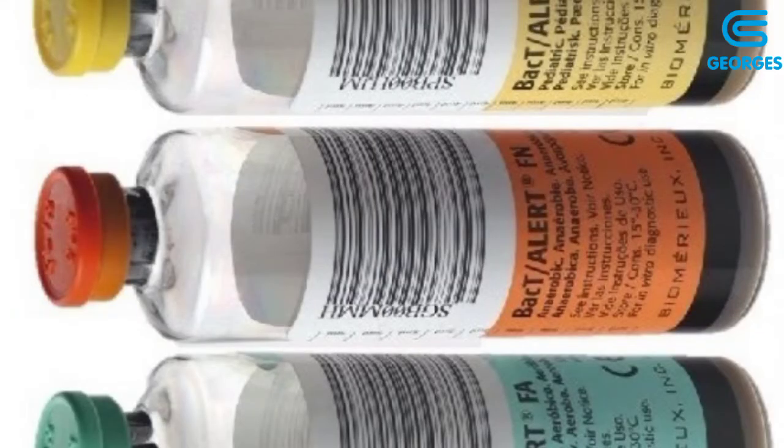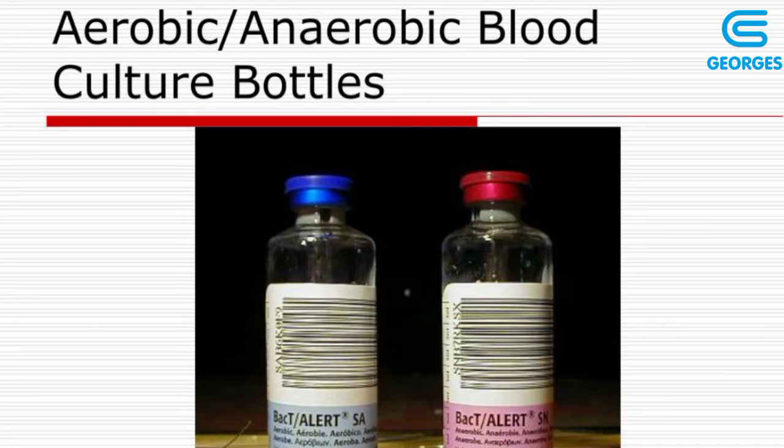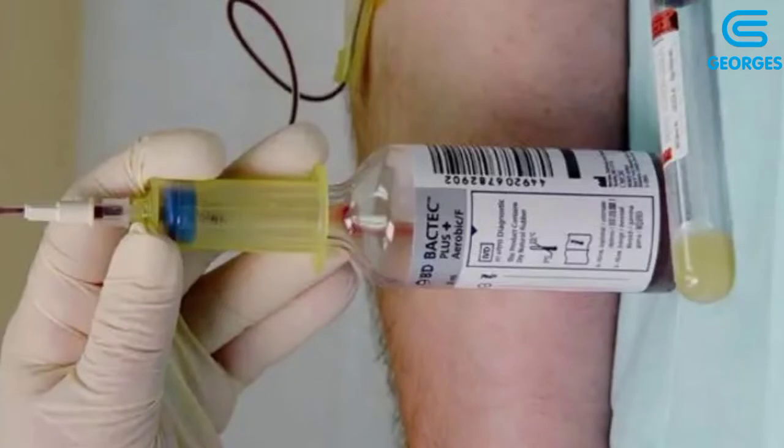The first tube of importance is the blood culture tube. Blood culture tubes vary from hospital to hospital depending on the manufacturer. We have the aerobic type and the anaerobic type. We first start with the aerobic bottle, then follow with the anaerobic bottle. We start with the aerobic type because when we puncture a blood vessel, there is air. So we fill the aerobic bottle first so that the blood fills the air in the tube and does not transfer air to the anaerobic bottle.